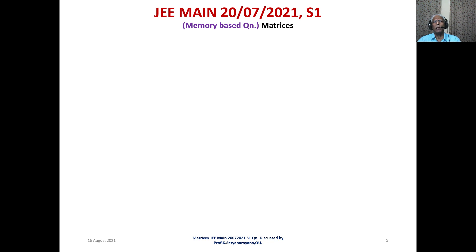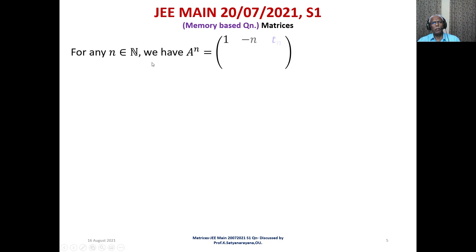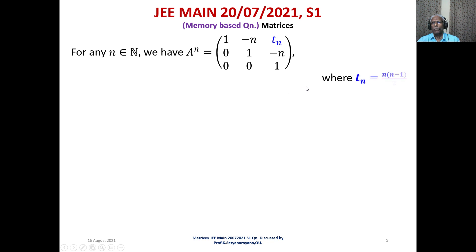I will show how the formula for tₙ can be obtained systematically at the end. For now, for any n ∈ ℕ, A^n equals the 3×3 matrix with first row [1, -n, tₙ], second row [0, 1, -n], third row [0, 0, 1], where tₙ = n(n-1)/2.